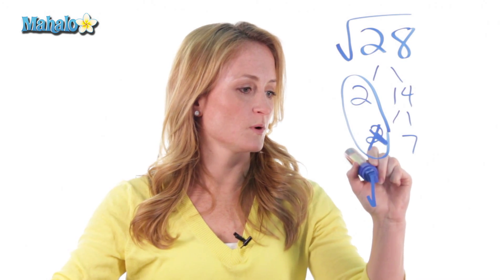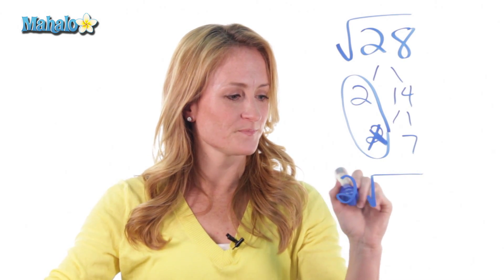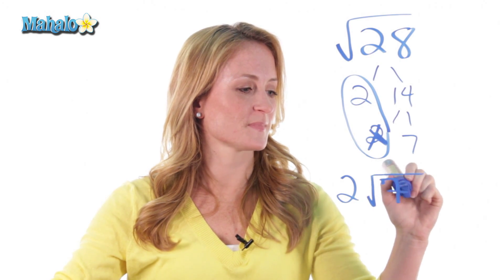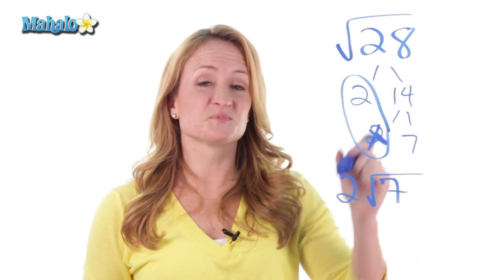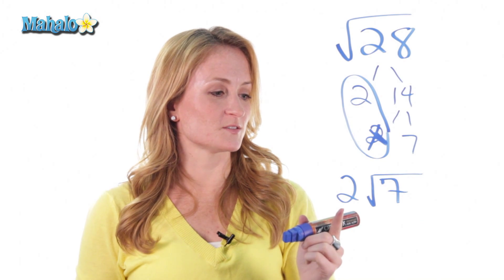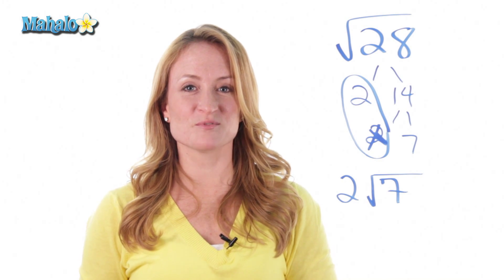So we bring our trap down. This 2 made it out, and this 7 didn't have a partner so it didn't make it out, and that 2 disappeared. So the square root of 28 is 2 root 7. And that's how you simplify a radical.